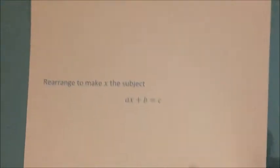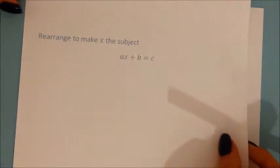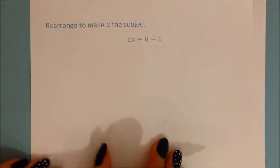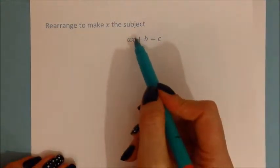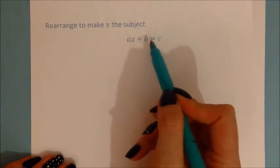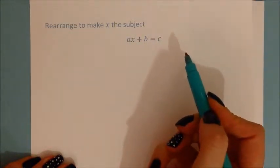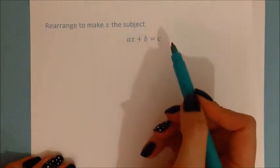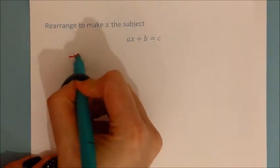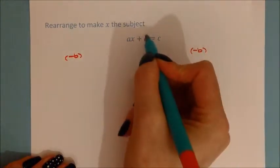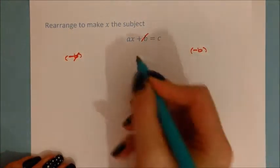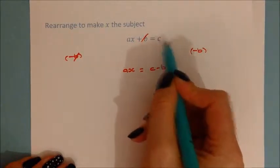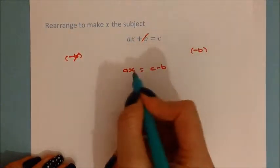Now if I give you the same format but with no numbers — rearrange to make x the subject — it's the same principle. x has been multiplied by a, then b was added, giving c. So to get x on its own, we do the inverse operations. We take away b from both sides, which cancels out, leaving ax equals c minus b.